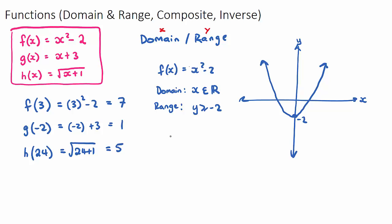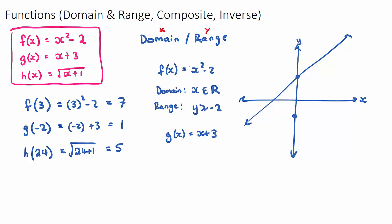For g(x) = x + 3, this is a straight line with y-intercept at 3. A straight line goes left and right forever and up and down forever, so the domain is x ∈ ℝ (all real numbers) and the range is also y ∈ ℝ (all real numbers).